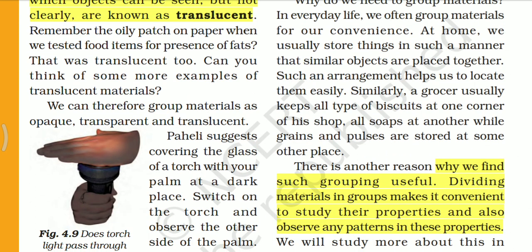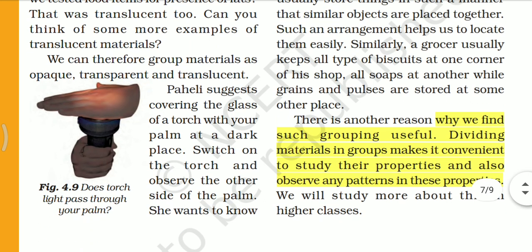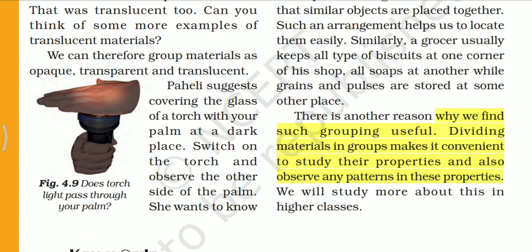Similarly, a grocer usually keeps all types of biscuits at one corner of the shop and all soaps at another, while grains and pulses are stored at some other place. Dividing materials into groups makes it convenient to study their properties and also observe any pattern in those properties.